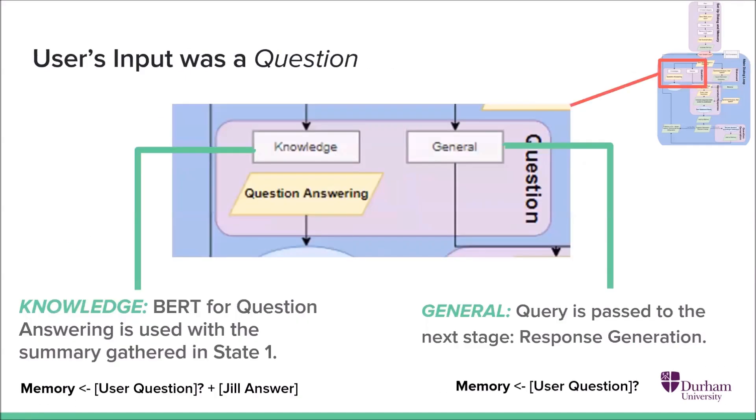So if the user's input was a question, we classify it into either a knowledge question or a general question. If it was a knowledge question, we use BERT for question answering using the summary we pulled from the setup stage to answer the user's question. And we store both user's question and Jill's answer in memory.